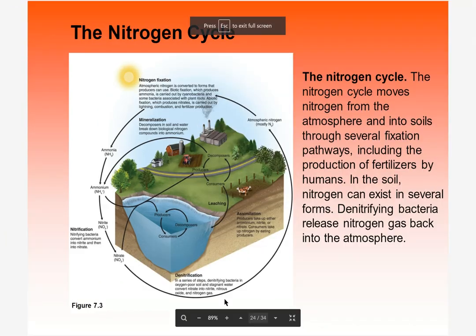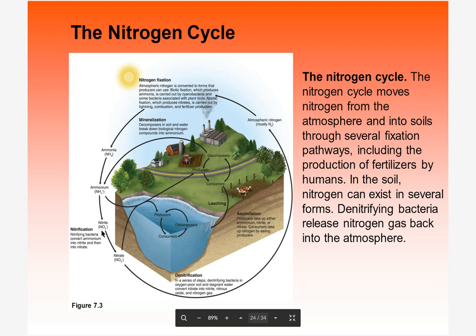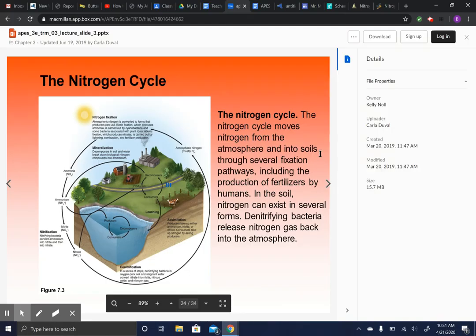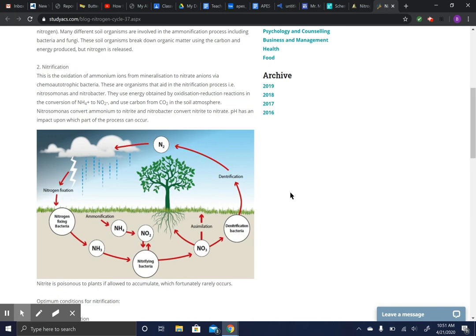Nitrogen fixation takes N₂ — which no organism can use directly — and converts it into ammonia, then into NH₄⁺. Bacteria then convert it into NO₂⁻ and NO₃⁻ that can be used by producers. Cyanobacteria, for example, can turn N₂ into ammonia, which becomes NH₄⁺ ions in the soil. These ions are further processed by bacteria and then used by producers and plants, which are eventually decomposed. Denitrification then puts the nitrogen back as N₂ into the air.